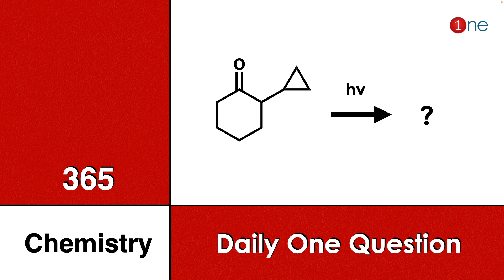Welcome to One Chemistry. This is the 365 Chemistry series — one daily question for you. Here you have cyclohexanone with a cyclopropane side chain, and you are shining light on it. You have to guess what will be the final product.